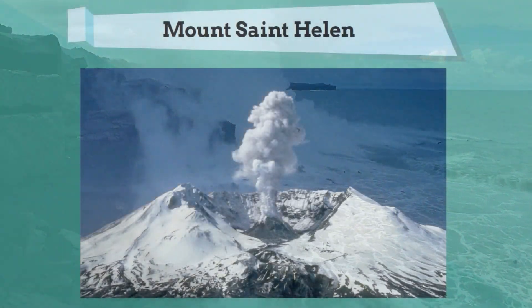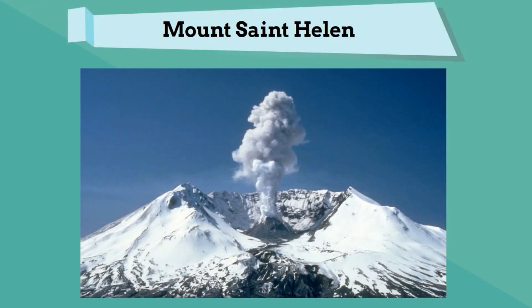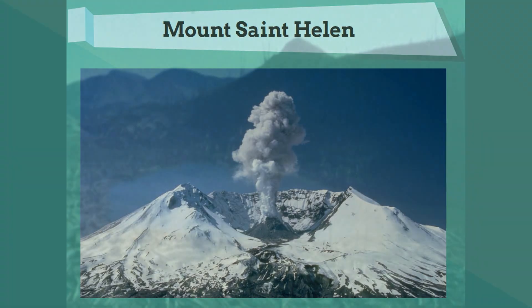Mount St. Helens exploded and half of a mountain was destroyed. The ash covered up any remaining soil. This would be an example of where primary succession could take place.